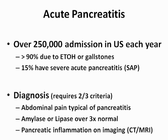To make the diagnosis of pancreatitis, two of three criteria must be met. Patients must have abdominal pain typical of pancreatitis — epigastric in nature, radiating through to the back, associated with nausea and vomiting — and amylase or lipase over three times normal limits, or pancreatic inflammation on imaging studies.